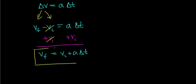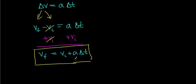This is one of our kinematic equations. It doesn't tell us anything new — it's basically just algebraically manipulating the definition of acceleration. But it gives us a quick way to find the final velocity given the acceleration of the object, the initial velocity of the object, and the time period over which the velocity is changing.